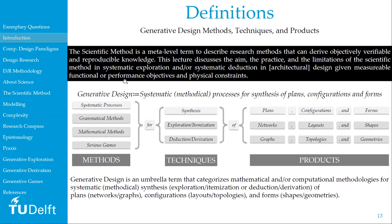Let me clarify some of the terms in the definition I just gave. Generative design is a generalized concept encompassing both the engineering definition — about mathematical deduction and derivation — and other approaches with a longer history in architectural design, based on generative grammars. It's an umbrella term for grammatical methods, mathematical methods, and serious games for exploration, itemization, deduction, and derivation of plans, networks and graphs, configurations, layouts, topologies, forms, shapes, or geometries.